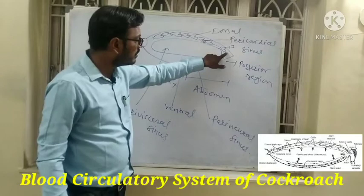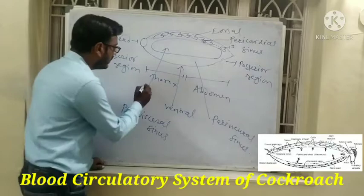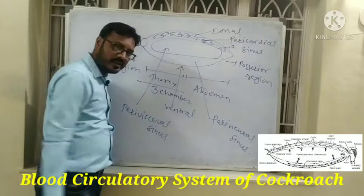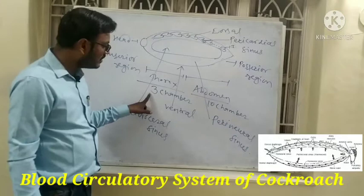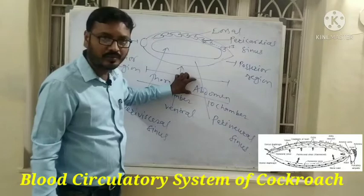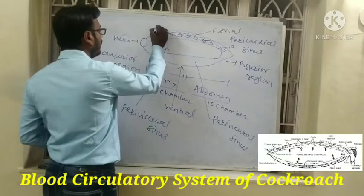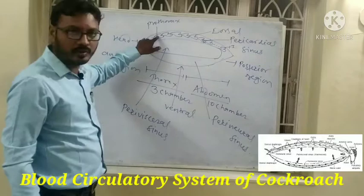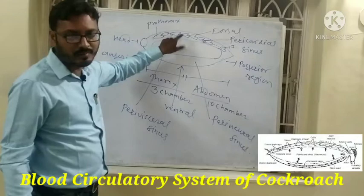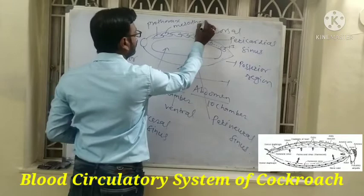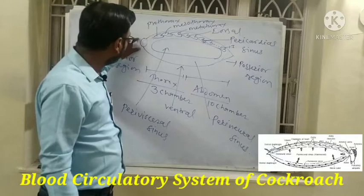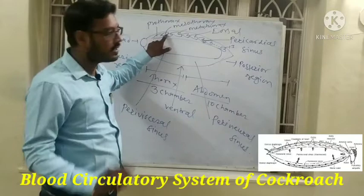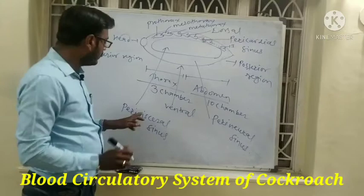Three chambers of the heart are present in the thoracic region and the remaining ten chambers are present in the abdominal region. The thoracic region has three parts: the anterior part is the prothorax, the middle is the mesothorax, and the last part is the metathorax.